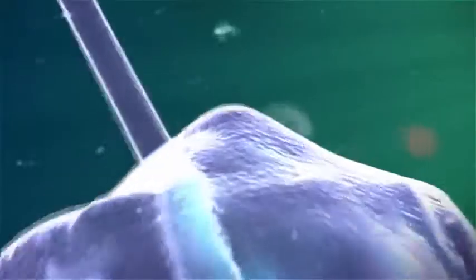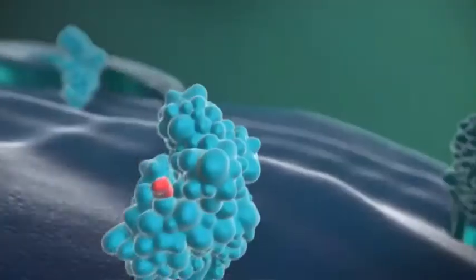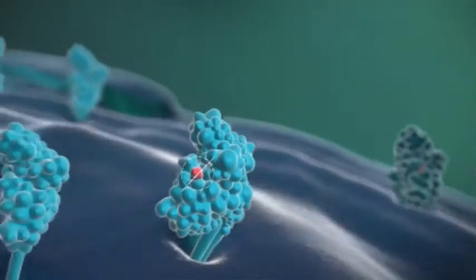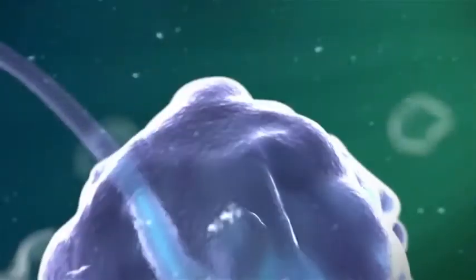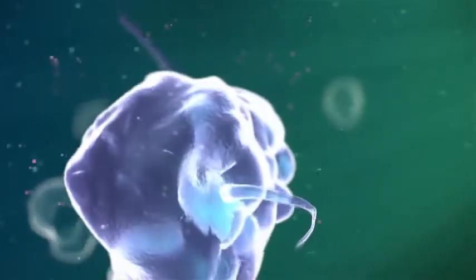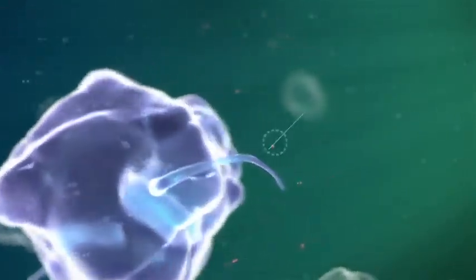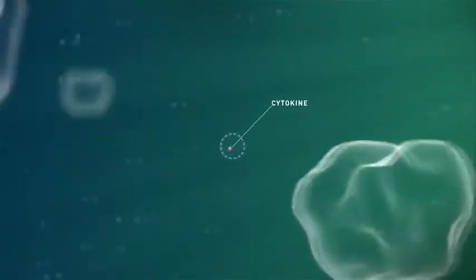These little pieces of bacterium are made visible on the outside by the macrophage. This way, the other cells of the immune system are able to notice that a bacterium has entered the body. Apart from that, something else is happening. Since the macrophage engulfs the bacterium, it creates inflammatory substances. These substances are called cytokines.